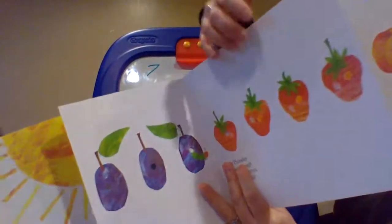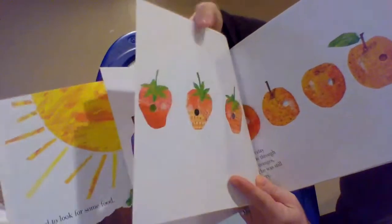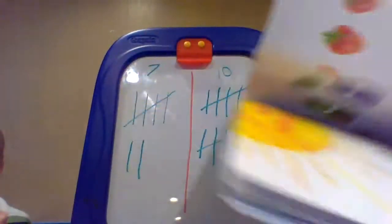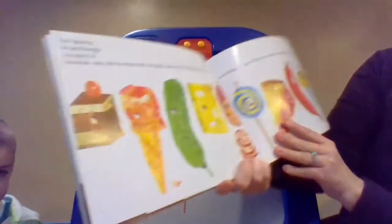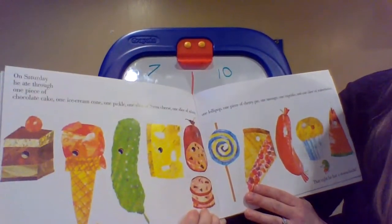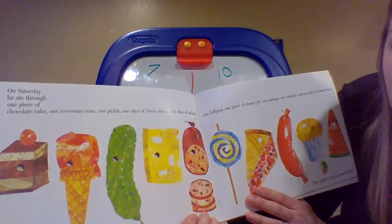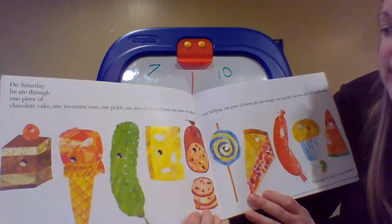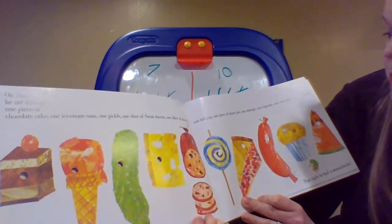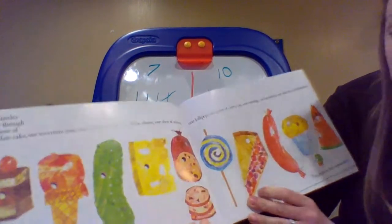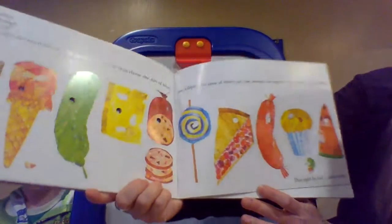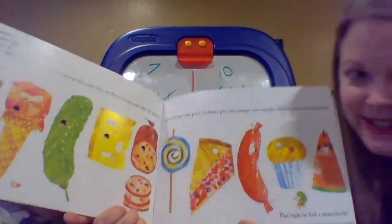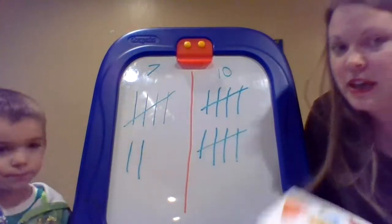On Friday, he ate through five oranges, but he was still hungry. He's a hungry caterpillar! What I like about this book — if you look, there are little holes where he ate through the food. It's kind of fun. On Saturday, he ate through one piece of chocolate cake, one ice cream cone, one pickle, one slice of Swiss cheese, one slice of salami, one lollipop, one piece of cherry pie, one sausage, one cupcake, and one slice of watermelon. That is a lot of food. That night, he had a stomach ache.